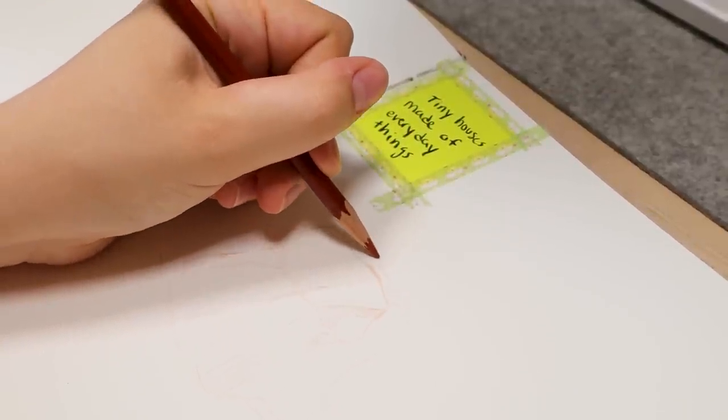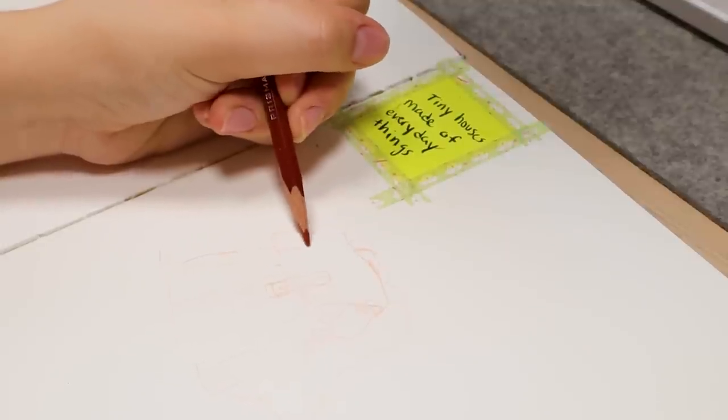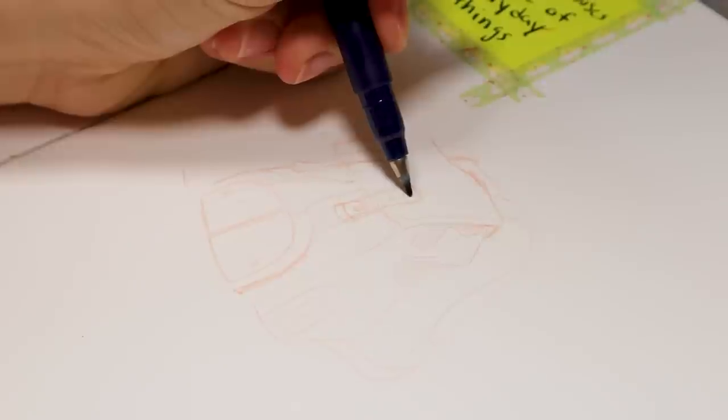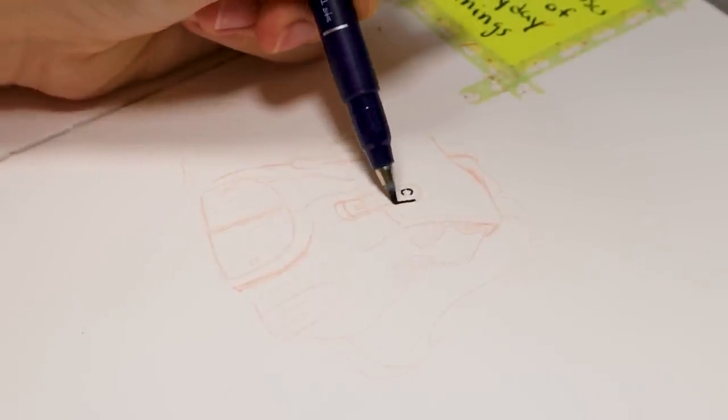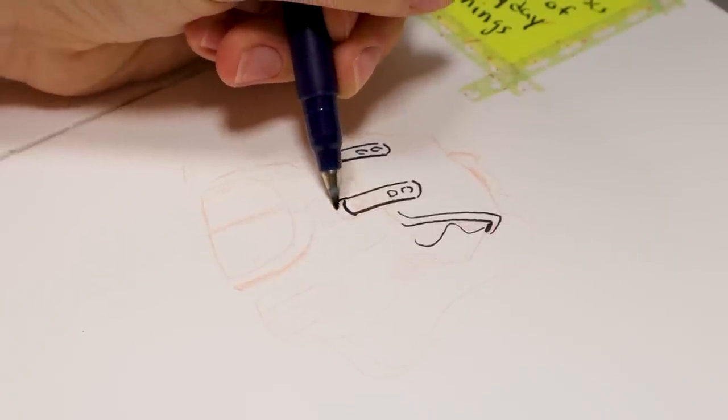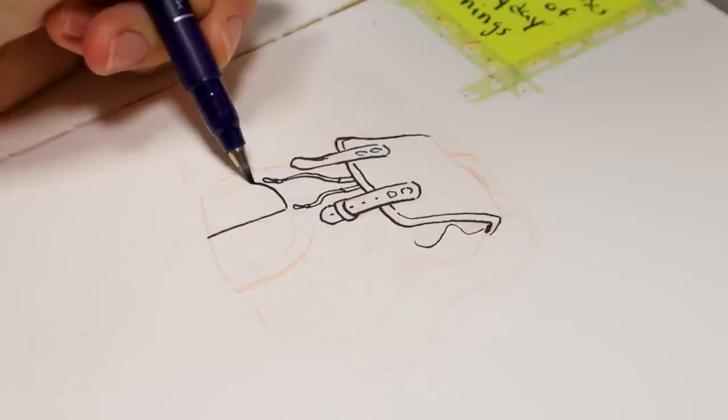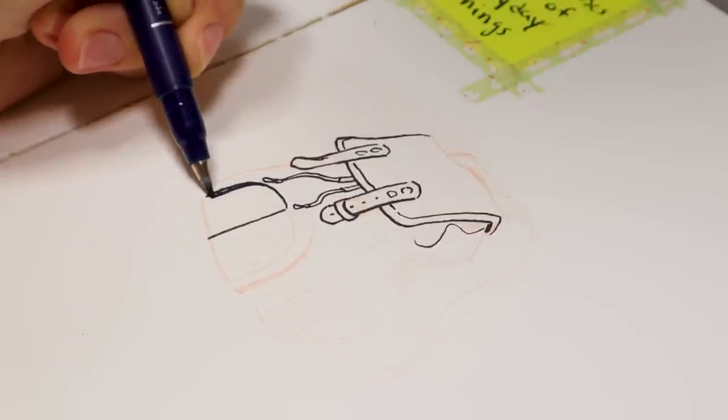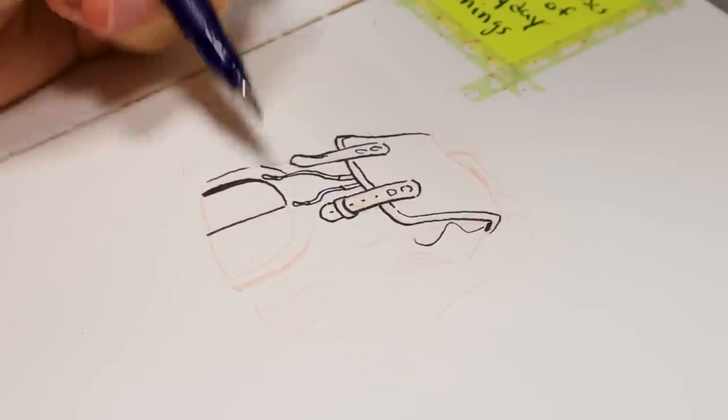So the prompt was tiny houses made of everyday things. And the first thing I thought of was, can I turn a backpack into a little house? Because I like to draw backpacks and I like to draw them on my characters. So I just looked up a photo of a backpack and tried to draw a backpack and put some doors on it. I don't know if making an everyday object into a little house is just slapping a door on it, but that definitely is one way to do it.